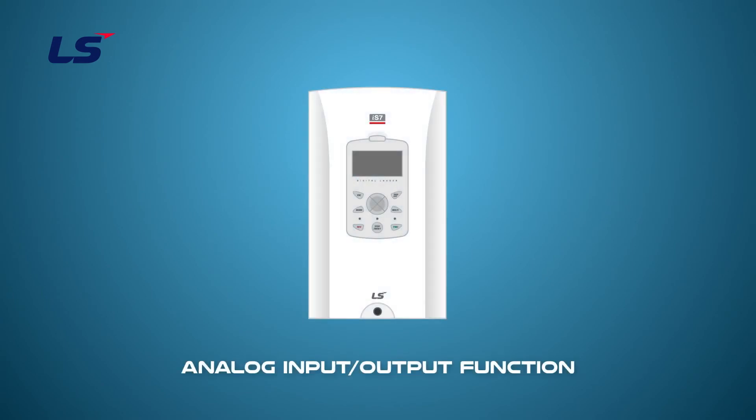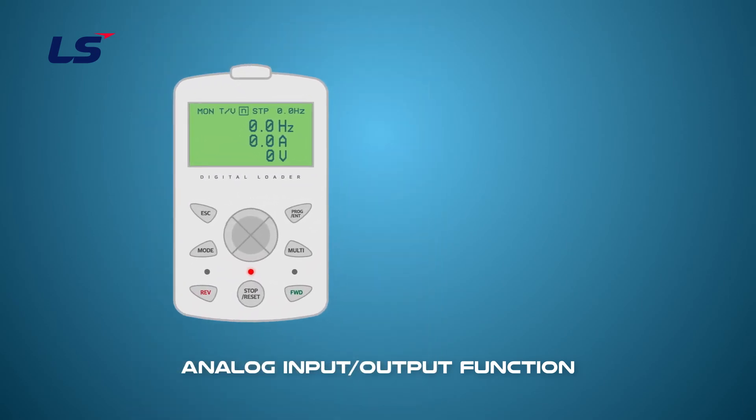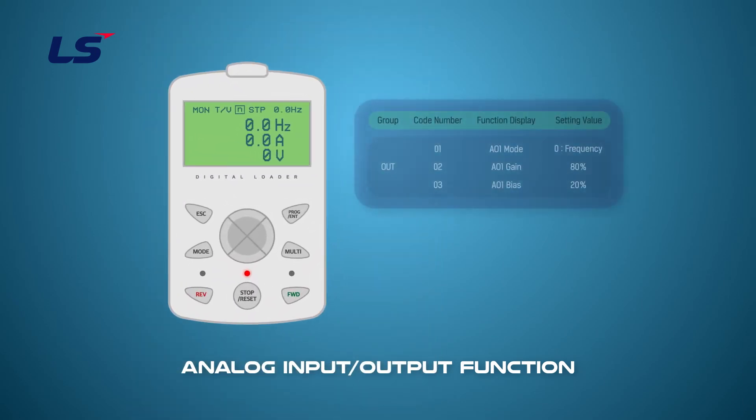Next, we will learn how to use the keypad to monitor the current frequency through the output of 2 to 10 volts. In this video, we will set the output to 2 volts at 0 hertz and 10 volts at 60 hertz.